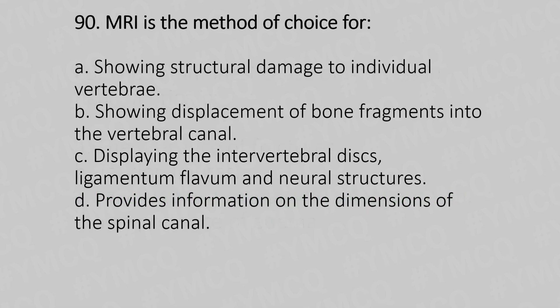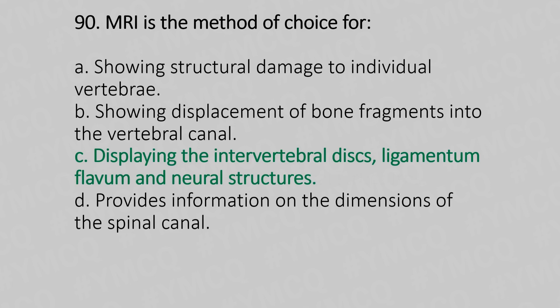Let's move to question number 90. MRI is the method of choice for: Option A, showing structural damage to the individual vertebrae. Option B, showing displacement of bone fragments into the vertebral canal. Option C, displaying the intervertebral disc, ligamentum flavum, and neural structures. Option D, provides information on dimensions of the spinal canal. The answer is Option C, displaying the intervertebral disc, ligamentum flavum, and neural structures.